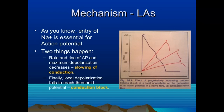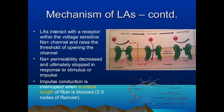Local anesthetics interact with the receptor within the voltage-sensitive sodium channels and raise the threshold for channel opening. Sodium permeability decreases and ultimately stops in response to stimuli such as pain or surgical stimulation. Impulse conduction is interrupted when a critical length of fiber is blocked - usually two to three nodes of Ranvier.